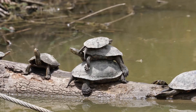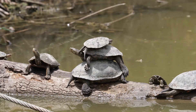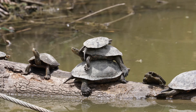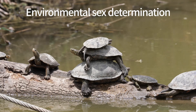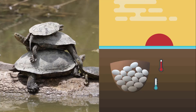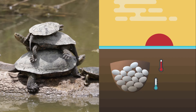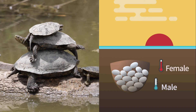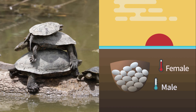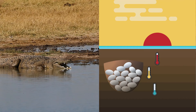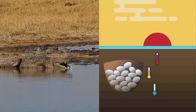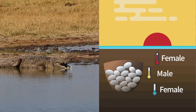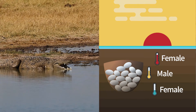Sex determination by chromosomes is widespread, but it is not the only existing mechanism. In many animals, in particular in reptiles, sex is determined by environmental factors, usually by temperature. Males hatch from turtle eggs incubated at low temperature, while females hatch from eggs incubated at higher temperature. In crocodiles, females hatch from eggs incubated at high and low temperatures, while males hatch from eggs incubated at intermediate ones.